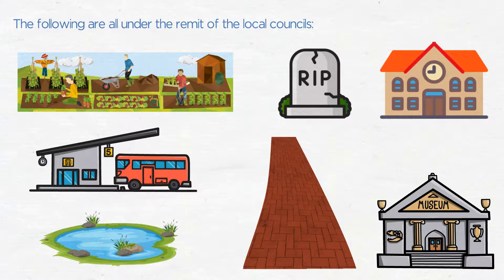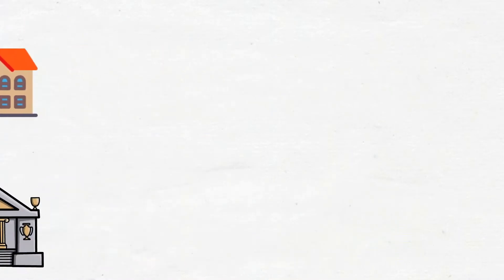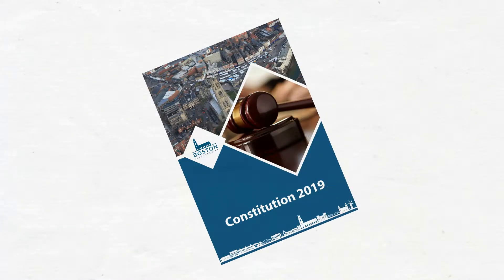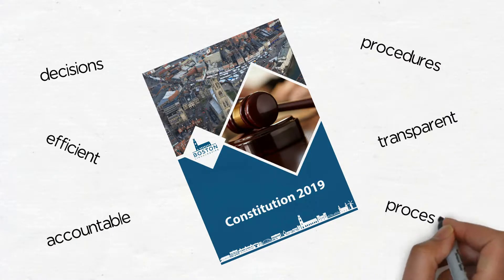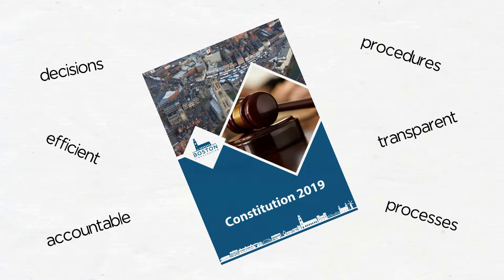Each layer of council has legal responsibility for its functions and can only deliver what it has the authority to provide. As an example, the Borough Council cannot make decisions on planning applications relating to waste and minerals, because this is the function of the County Council. The Constitution sets out how the Council operates, how decisions are made, and the procedures which are followed to ensure that these are efficient, transparent and accountable to local people. Some of these processes are required by law, while others are a matter for the Council to choose.